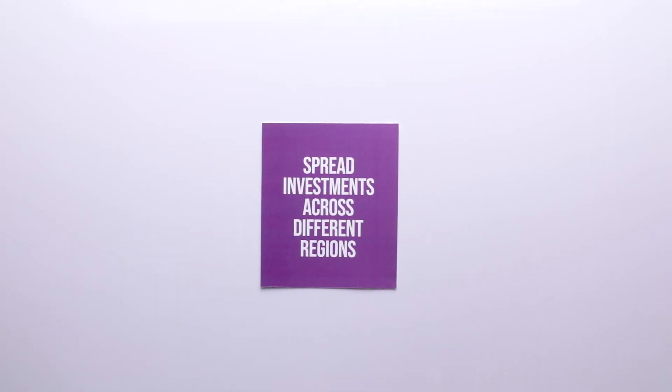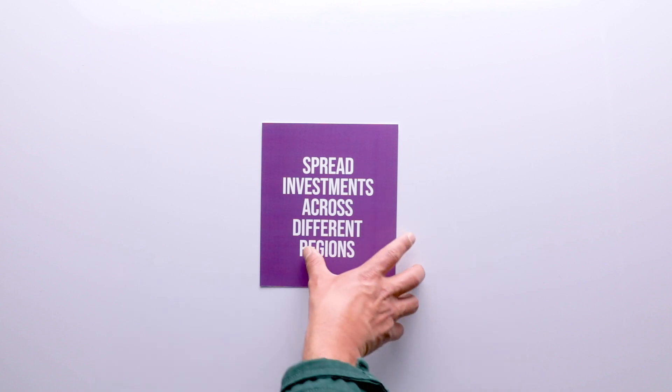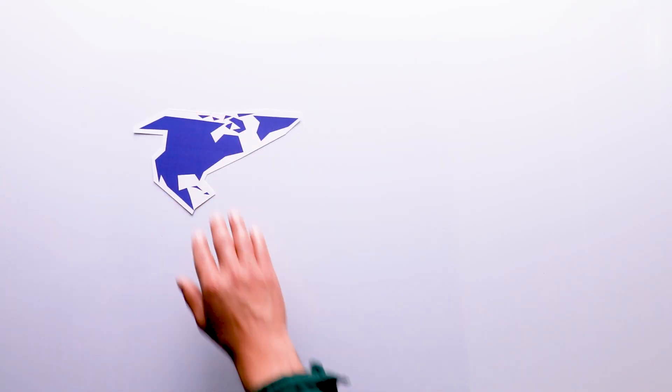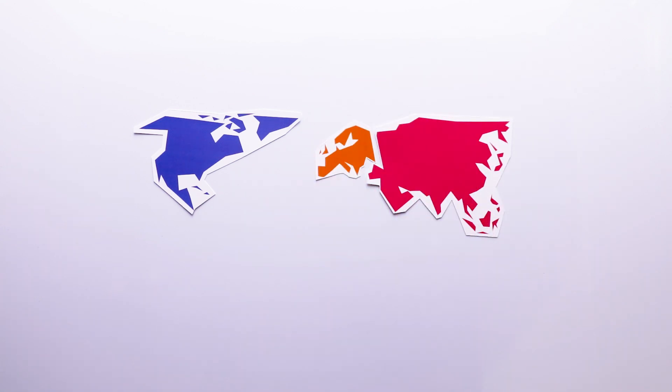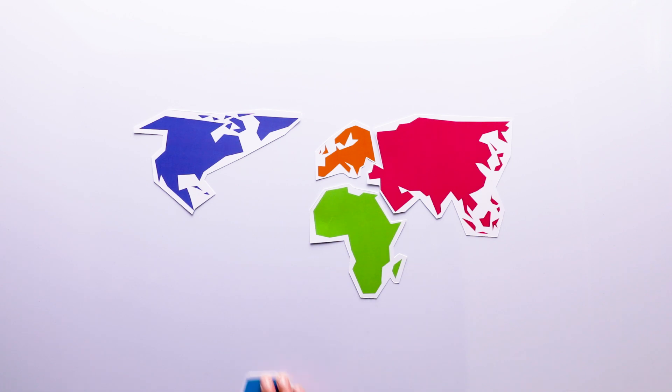Three: spread investments across different regions or countries to reduce the impact of regional economic events. For example, in the financial crisis of 2007-2008, global securities would help cushion the blow to your portfolio.